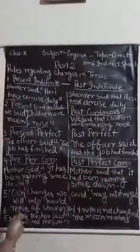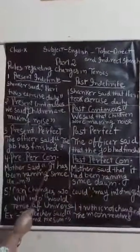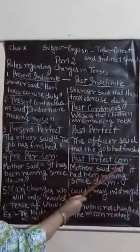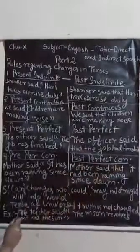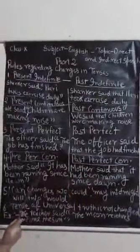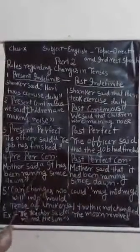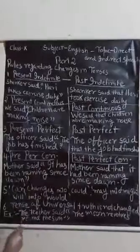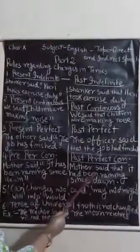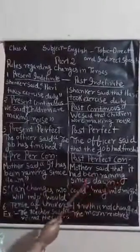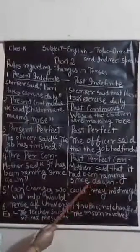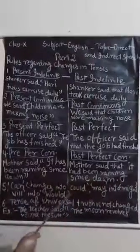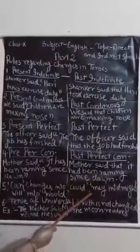Present perfect continuous changes into past perfect continuous. Mother said it has been raining since dawn. Mother said that it had been raining since dawn. Can changes into could.